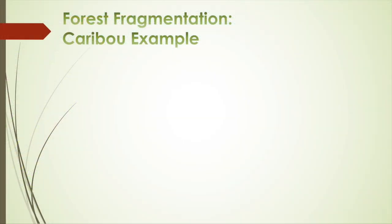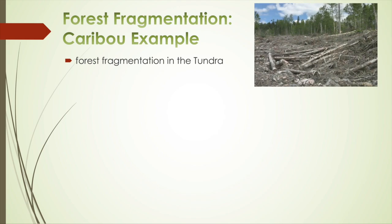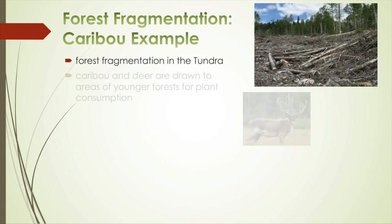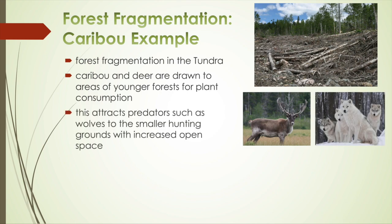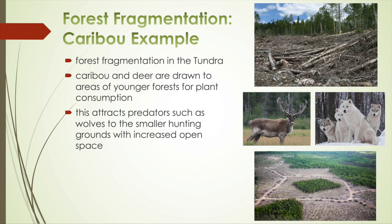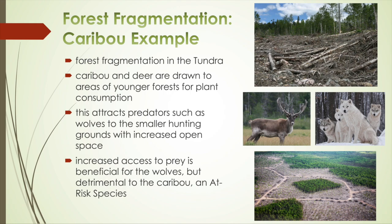For example, the caribou. There is a lot of forest fragmentation in the tundra, so caribou and deer are drawn to areas of younger forests for plant consumption, which are found at the edges of forests that have recently been cut down and are now growing back. Having prey more accessible attracts predators such as wolves to the smaller hunting grounds with increased open space. This increased access to prey is beneficial for the wolves but detrimental to the caribou, which is an at-risk species.